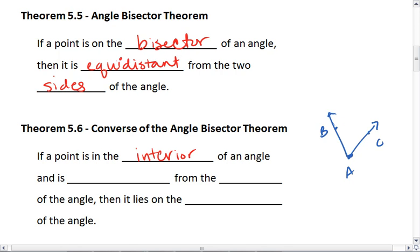So if I have an angle and I have some point that's on the inside of this angle, and my point is equidistant from the sides of the angle, then that point must lie on the bisector of the angle. Meaning angle 1 must be congruent to angle 2 here.